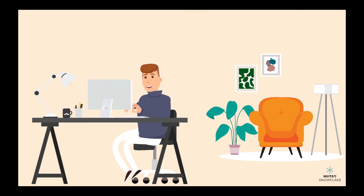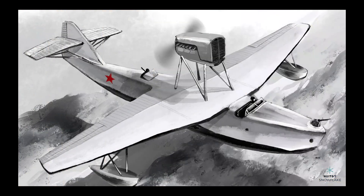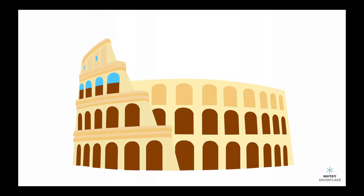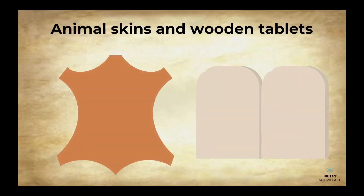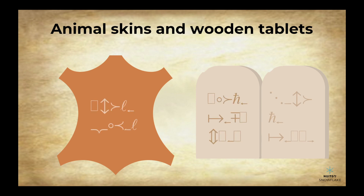The history of encryption goes back a long way, all the way to ancient times. Back then, people used things like secret messages written on animal skins or wooden tablets to communicate. But as time went on, people got more creative with their encryption methods.